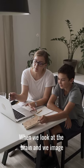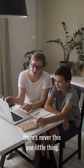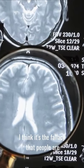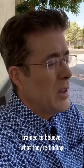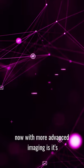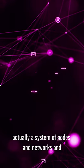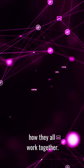When we look at the brain and we image the brain, there's never this one little thing. I think it's the fallacy that people are trained to believe. What they're finding now with more advanced imaging is it's actually a system of nodes and networks and how they all work together.